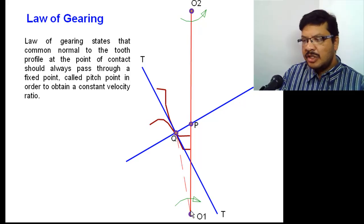Now draw a line joining O1 to Q and O2 to Q. Next draw a perpendicular from point O1 to common normal. Then this point you call as M.